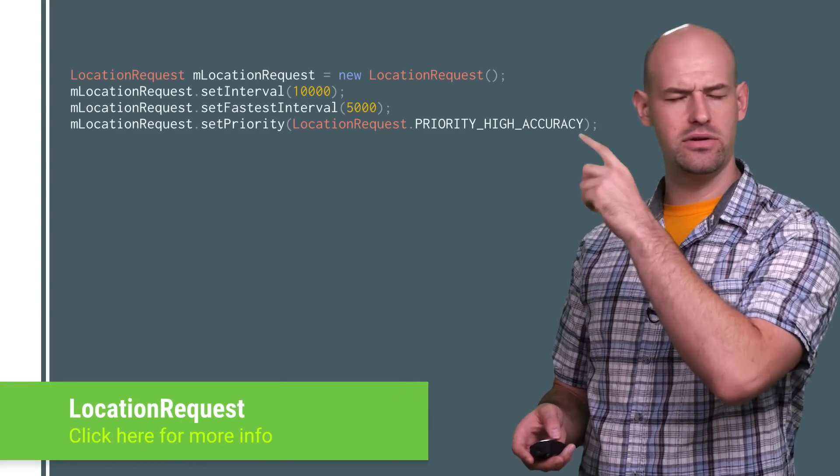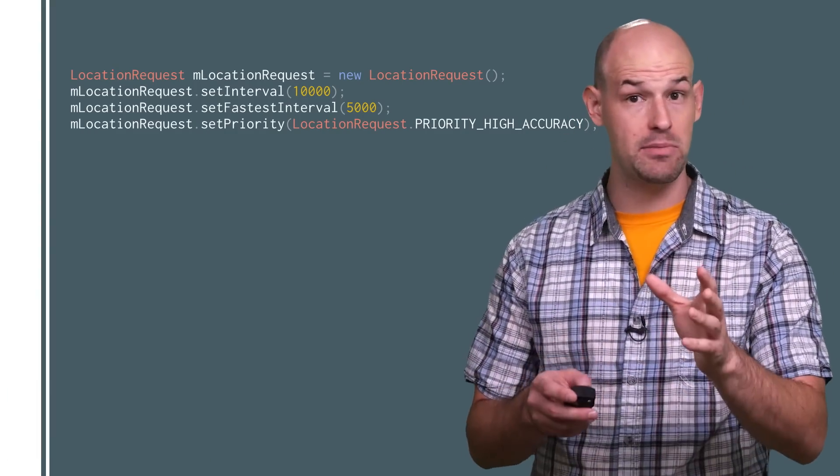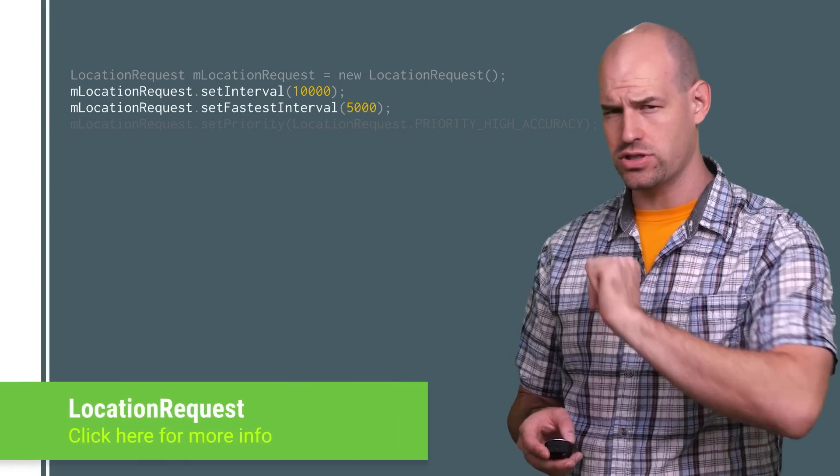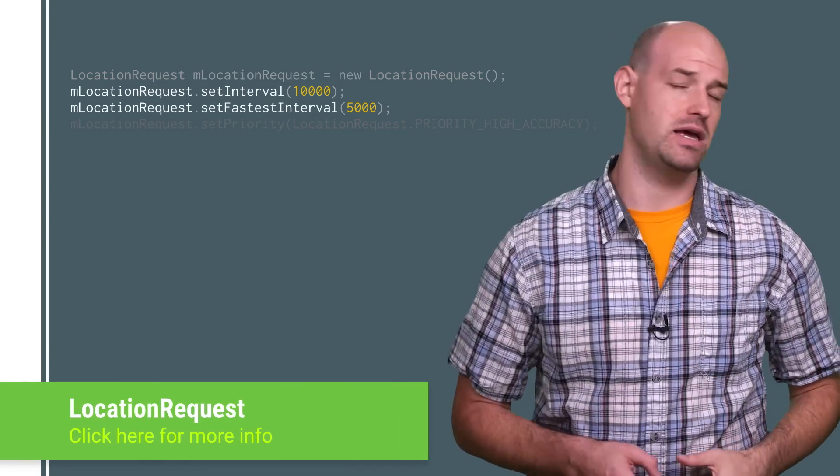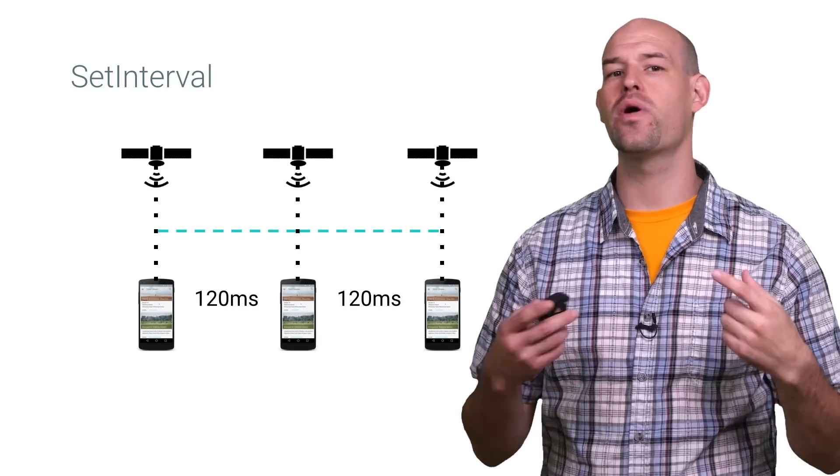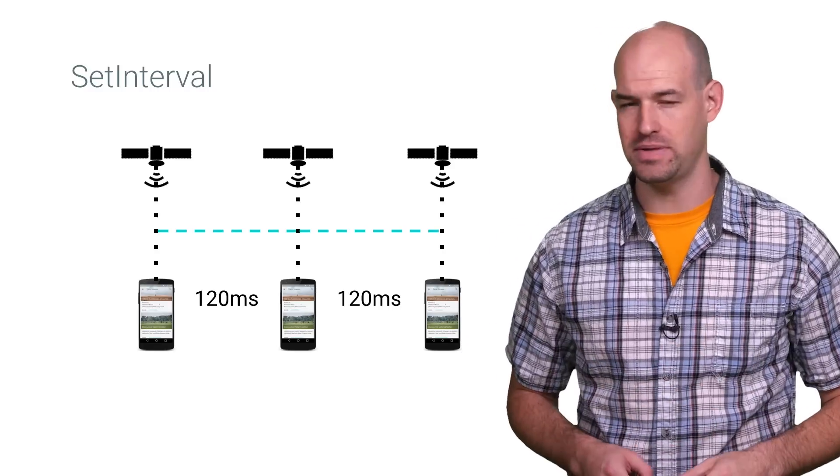A standard location request looks a little something like this. And in the name of performance, let's take a look at those first two values, namely the interval APIs. Set interval sets the rate in milliseconds at which your app prefers to receive location updates.